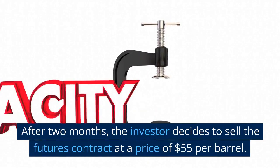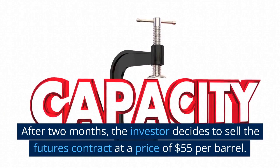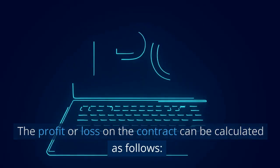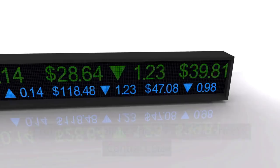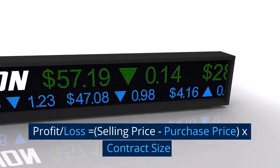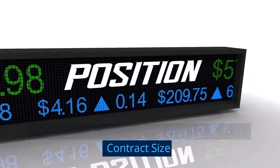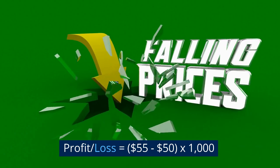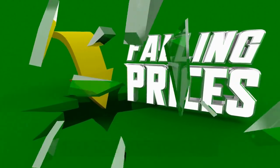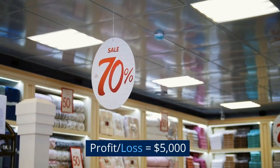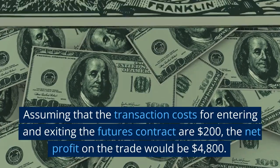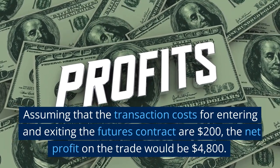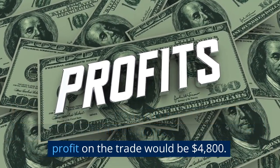After two months, the investor decides to sell the futures contract at a price of $55 per barrel. The profit or loss on the contract can be calculated as follows: Profit/Loss = (Selling price − Purchase price) × Contract size = ($55 − $50) × 1,000 = $5,000. Assuming that the transaction costs for entering and exiting the futures contract are $200, the net profit on the trade would be $4,800.